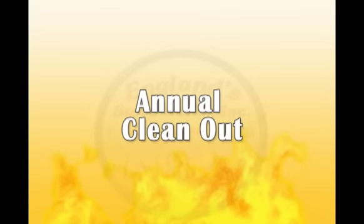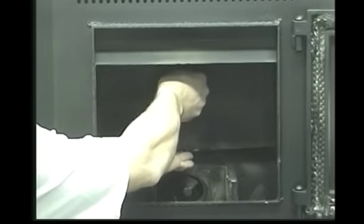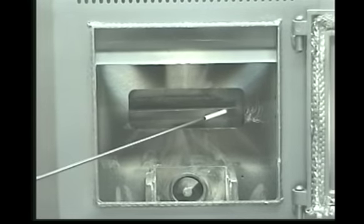For annual clean out, it is necessary to remove the baffle plate and burn pot. Remove the baffle plate with an up and outward motion. Clean the exhaust chamber which is exposed now that we have removed the baffle plate.